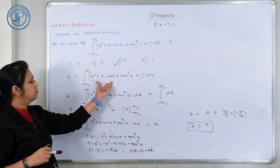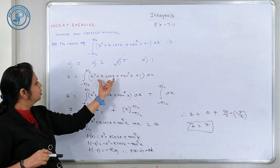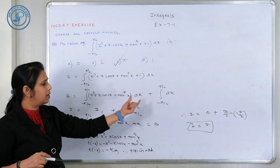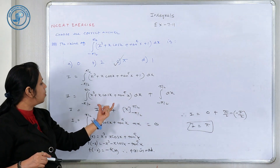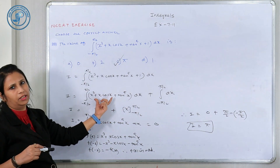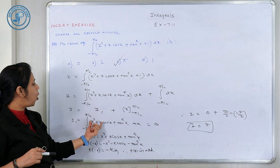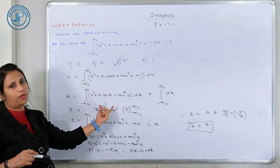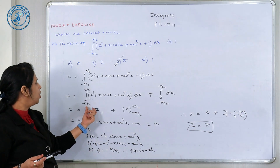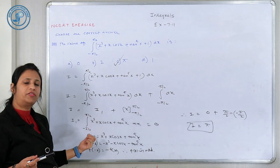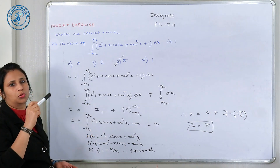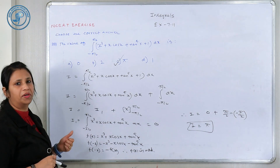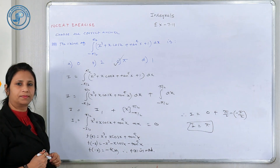फिर से देखेंगे — 2 में split किया: I₁ और dx integral। I₁ को check किया — whether even or odd। Odd function है, so directly minus A to A integral = 0। अगर even function होता तो 2 × 0 to A, F(X) DX हो जाता। यह property हम already कर चुके हैं।